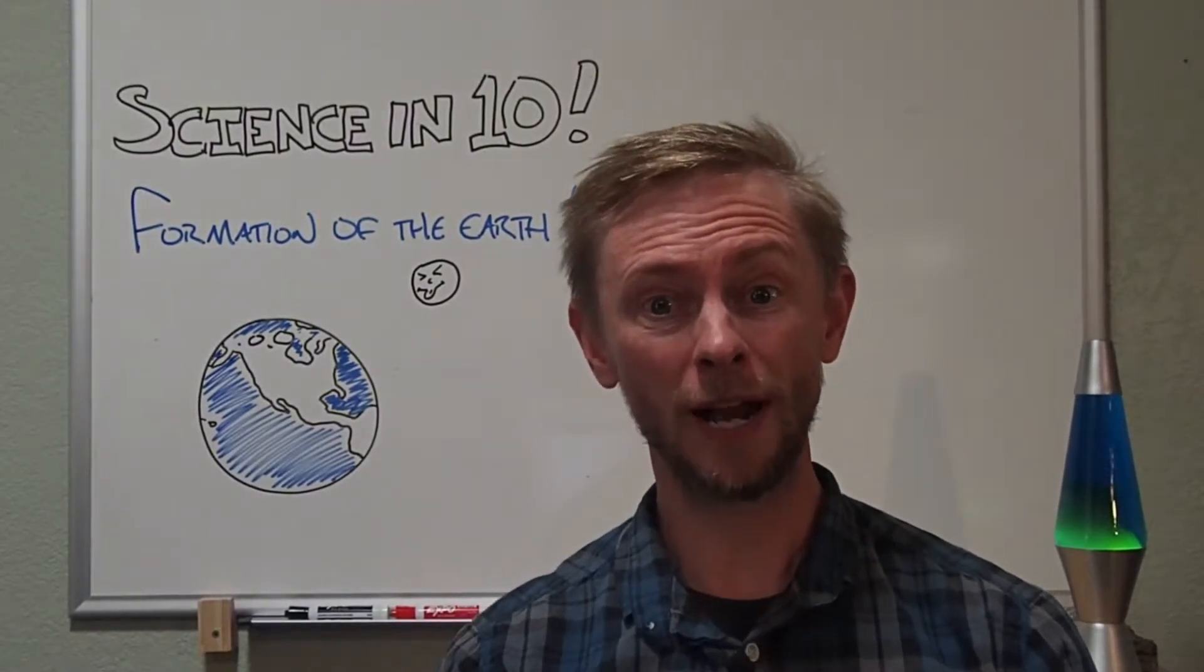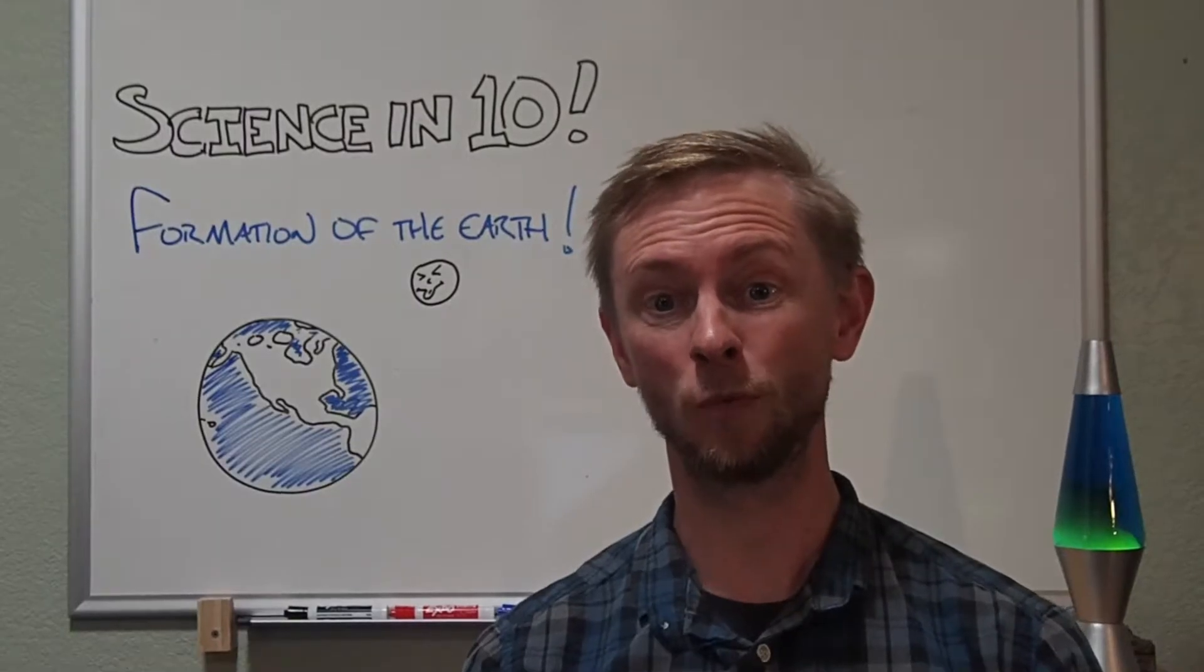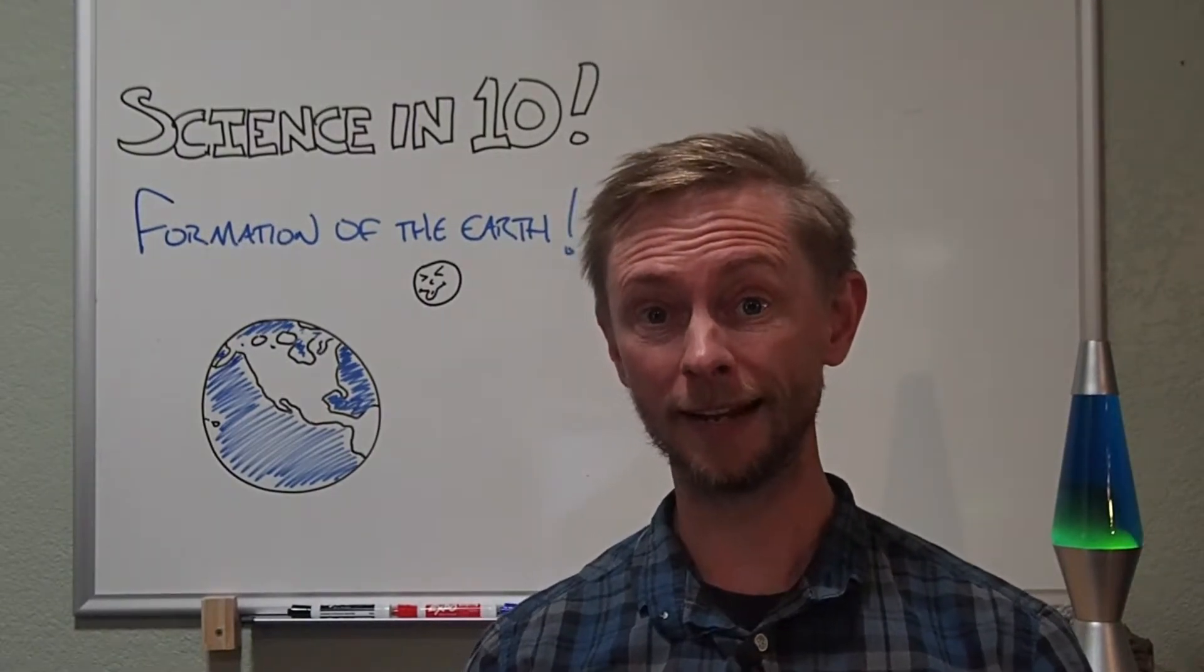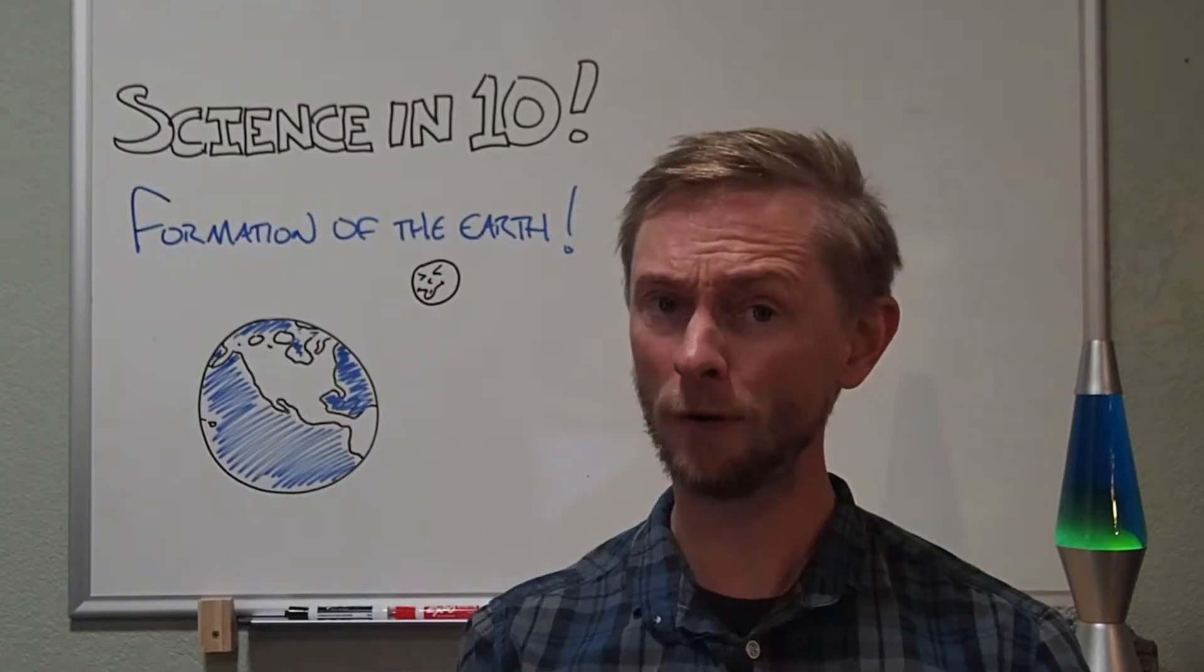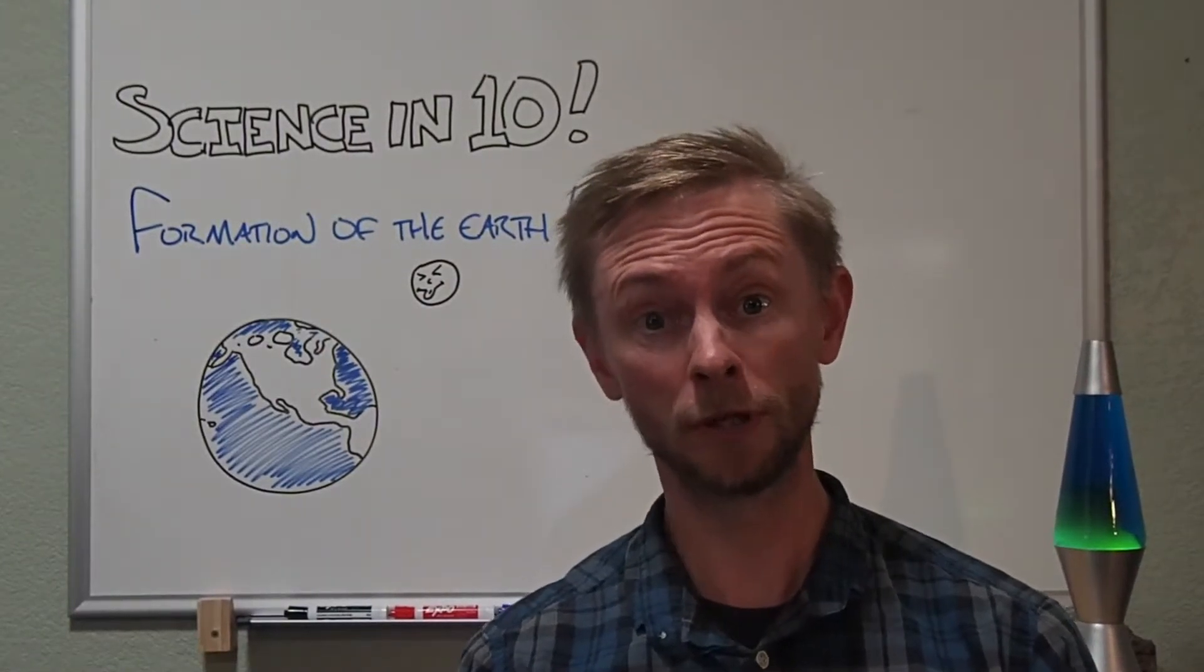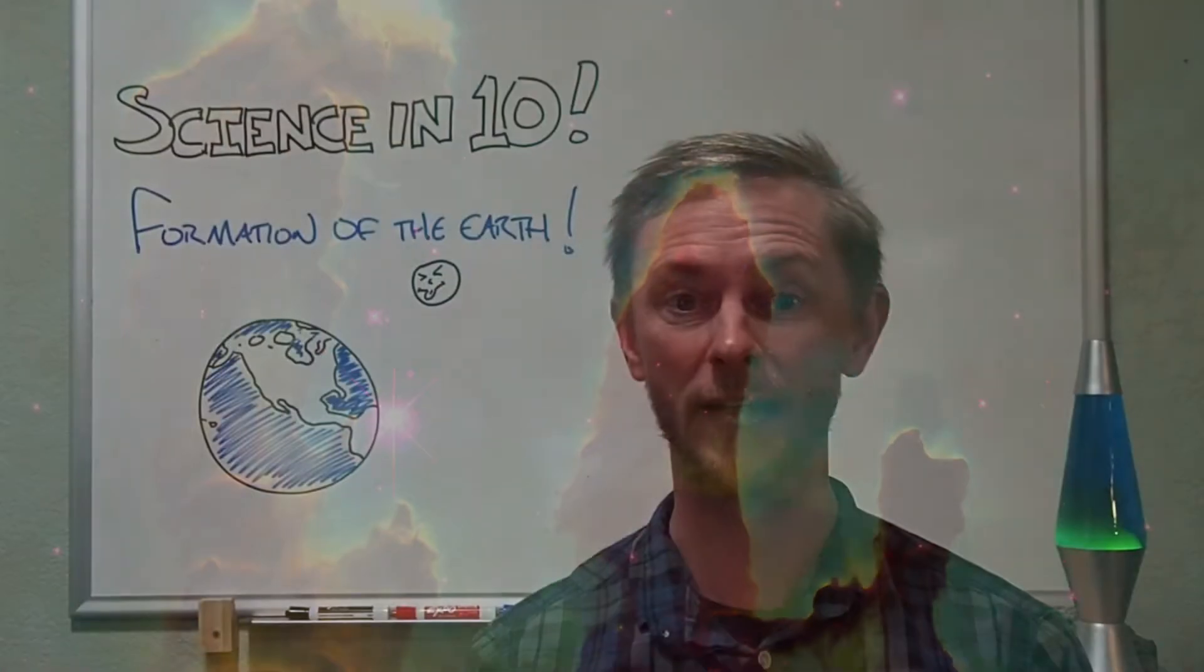For that, we'll have to set the Wayback Machine all the way to just shy of 5 billion years ago, when our solar system was just beginning to form. Our solar system began as a nebula, a dense rotating cloud of interstellar gas and microscopic dust within the Milky Way galaxy. Probably not much unlike the Eagle Nebula that we can observe today.